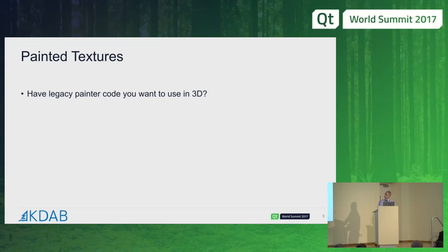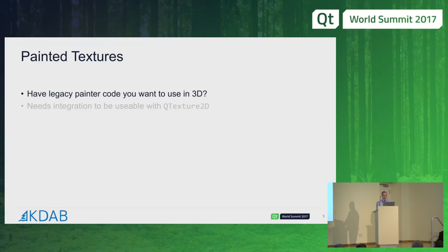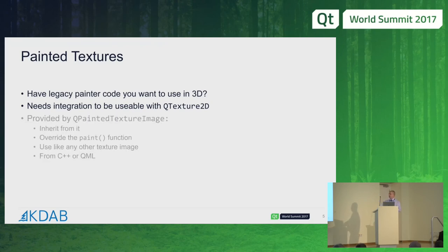Something else that's new in 5.9 was the ability to integrate any legacy painting code that you might have. If you're updating your applications to incorporate 3D content, chances are you have some legacy QPainter code from your widget painting or custom graphics view painting. To get images onto an object, Qt 3D typically uses QTexture2D, so what we need is a bridge from QPainter to QTexture2D. That's provided by QPainterTextureImage.